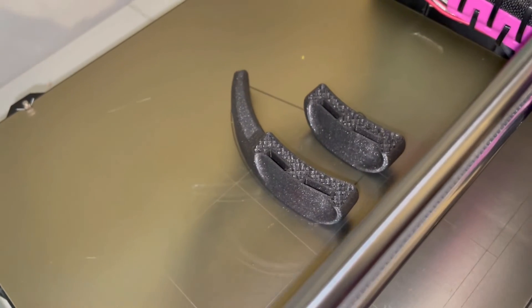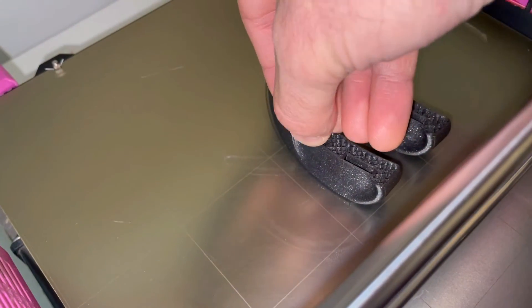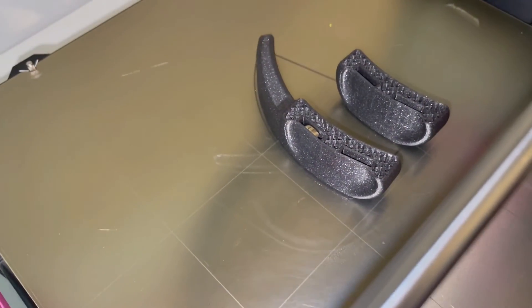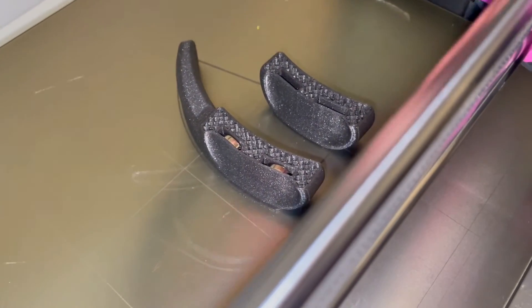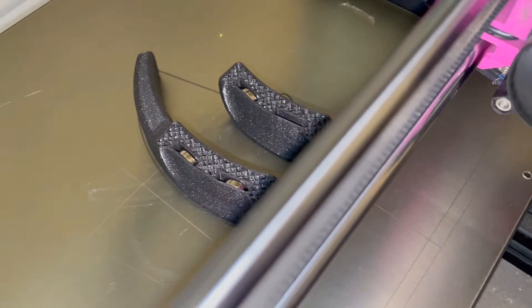Once the printer is paused, we will proceed to insert the magnets. The orientation of the magnets is very important. Both magnets need to be oriented in the same way. So the polarity needs to be facing the same side for both magnets.